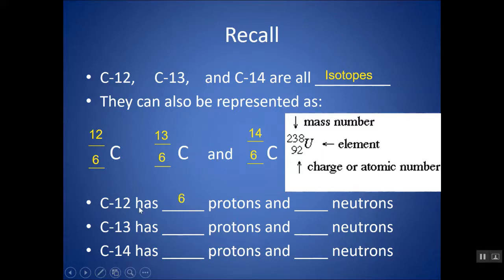C-12 would have six protons and six neutrons — 12 minus 6 is 6. C-13 has six protons and seven neutrons. C-14 has six protons and eight neutrons.